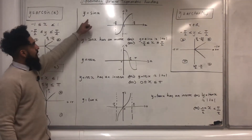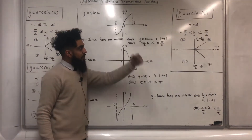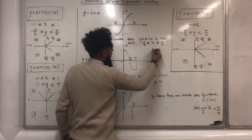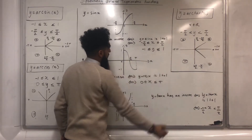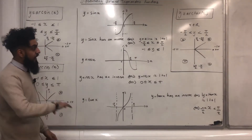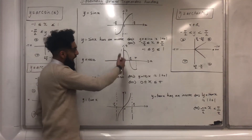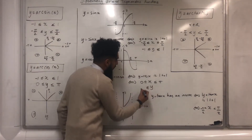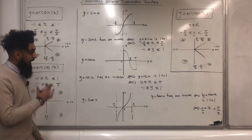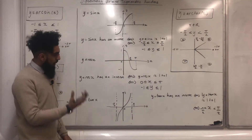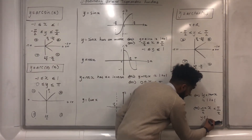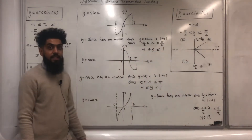Going back to y equals sine x, the domain for which it has an inverse is x between minus pi over 2 and pi over 2, and the range is y more than or equal to minus one but less than or equal to one. For y equals cos x the range is also y between minus one and one. For y equals tan x the range y will just be any real number, since y goes to positive infinity and to negative infinity.